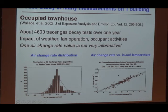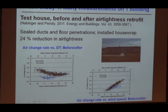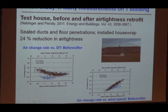The third case study involved nearly a year of measurements in a townhouse, examining the impact of weather, fan operation, and activities — a big dataset. The air change rate as a function of temperature difference showed the expected relationship, but any one measurement is just one data point; you need a variety of conditions to really understand a building. The fourth case study measured infiltration rates before and after an air tightening retrofit, with plots of air change rate versus temperature difference and versus wind speed clearly showing the effect of the work.